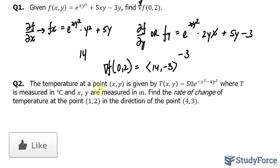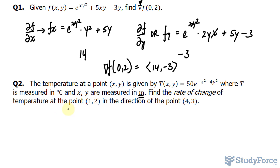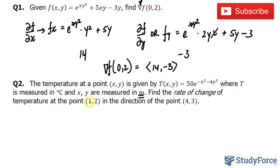Now let's move on to something more complicated. In question number 2, they ask: the temperature at a point x, y is given by the function t at x, y, equal to the expression on the right side, where t is measured in Celsius and x and y are measured in meters. Find the rate of change of temperature at the point (1, 2) in the direction of the point (4, 3). So we'll find the gradient of this function — we want the rate of change starting at the point (1, 2) going in that direction precisely.